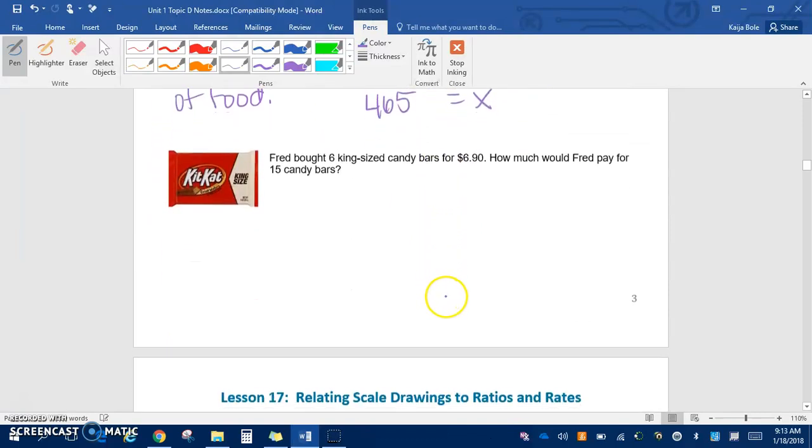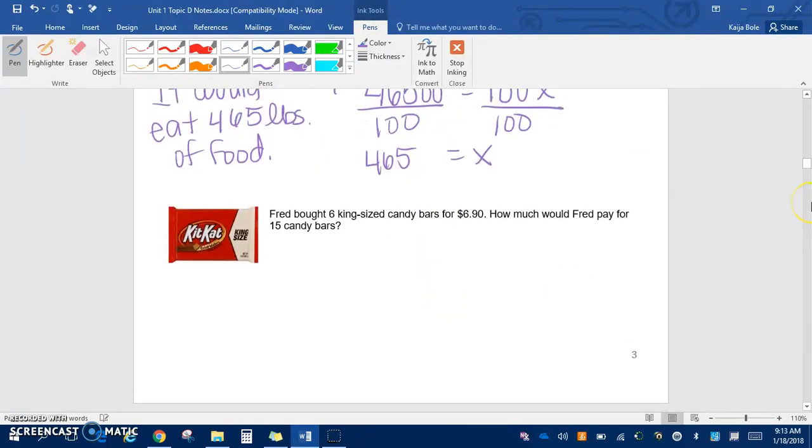We've got one more here. It says that Fred bought six king-size candy bars for $6.90. How much would Fred pay for 15 candy bars? If we want to keep in our similar order that we've been doing before, we're going to put money on top and then number of candy on the bottom.